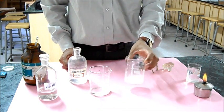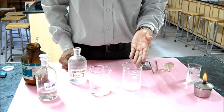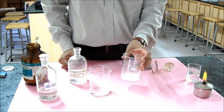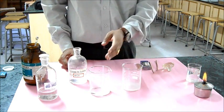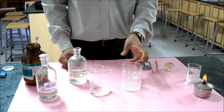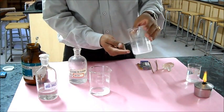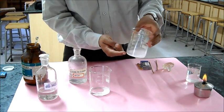It reacts with lime water. This is another neutralization reaction where lime water is a base and the gas is acidic. Because of that, it turns into a white precipitate which changes the color of the lime water.